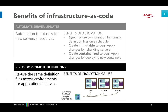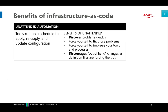With infrastructure as code, because it's code, you can reuse and promote these definitions across environments — dev, stage, production — for applications, servers, or infrastructure. The benefit is that if you have Ansible playbooks or Terraform files, you can reuse them across environments and know that all your environments are the same. With unattended automation, tools run on a schedule and can apply, reapply, or update. If you change the code and run it, you can discover problems very quickly — for example, if a server is running, you do an update and something doesn't work.